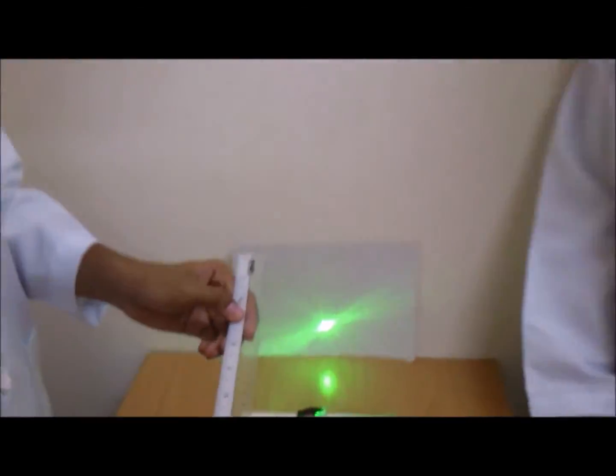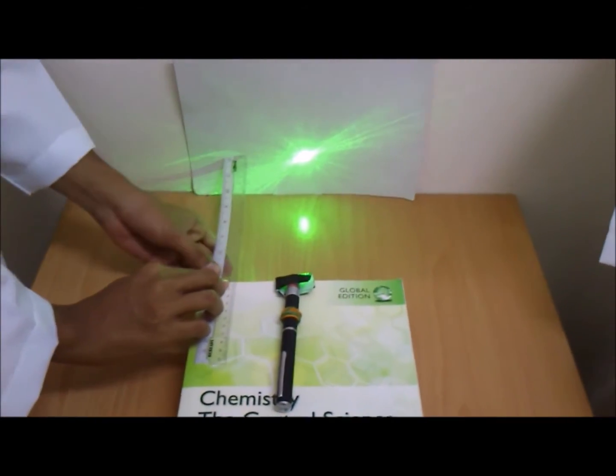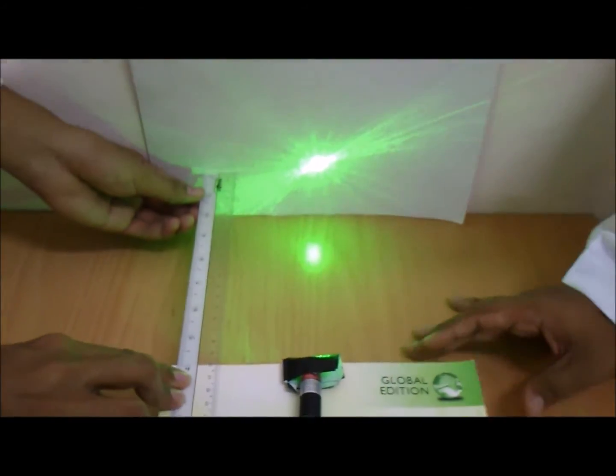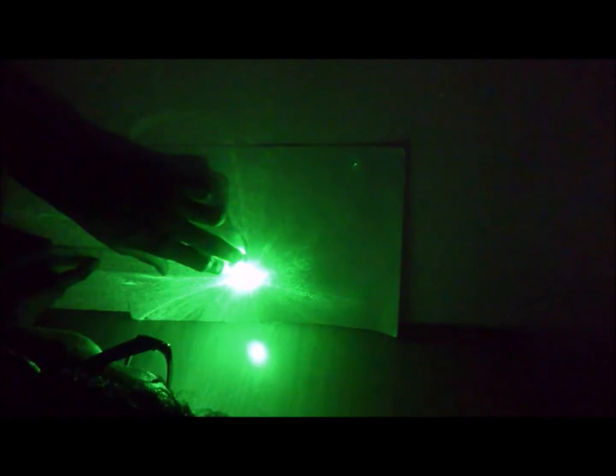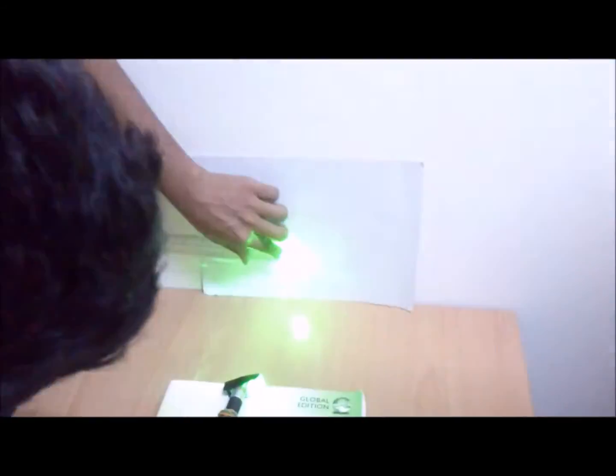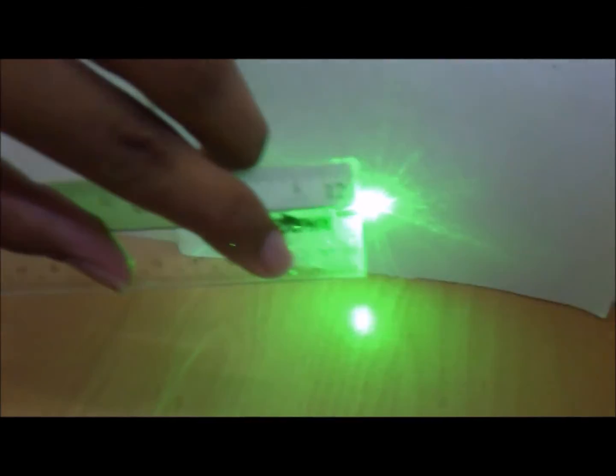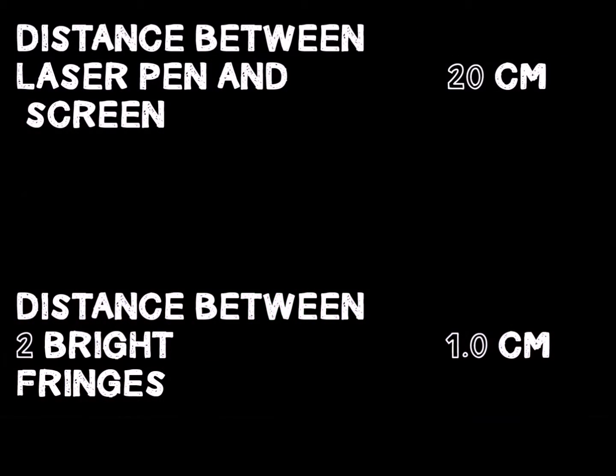Since the distance is the manipulated variable, we change it to 20cm away from the screen and calculate the distance between two bright fringes for 20cm. Again, we change the distance to 30cm away from the screen.